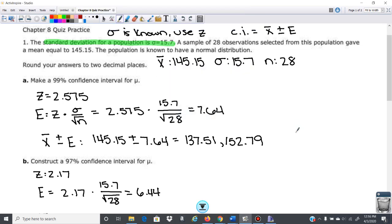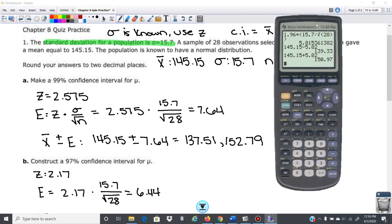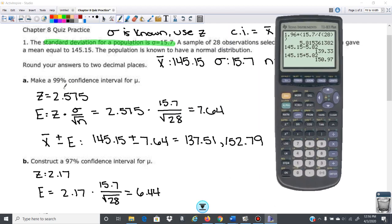Okay, so as promised, I'm going to show you guys how to do this in your calculator, the problems that we just did. So we're going to pull up our calculator here, and we're going to do the 99% confidence interval first.